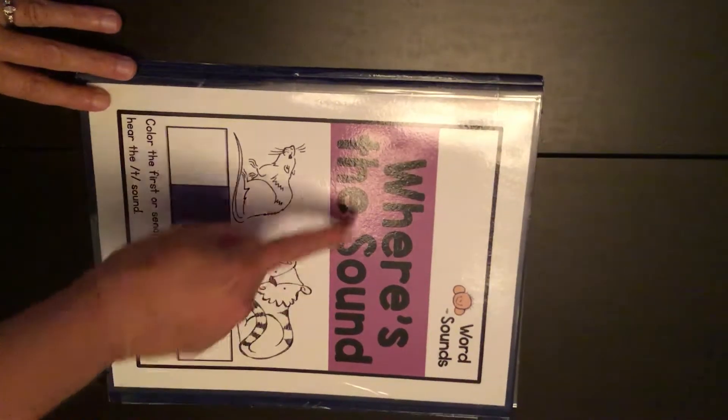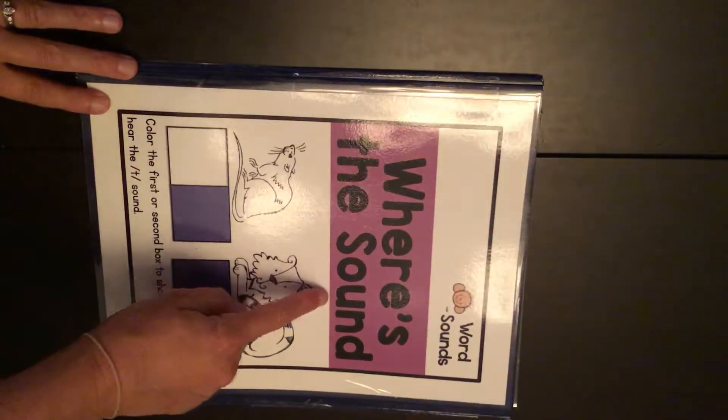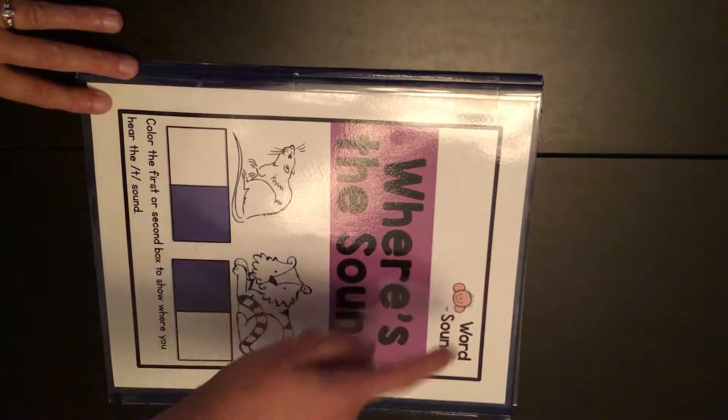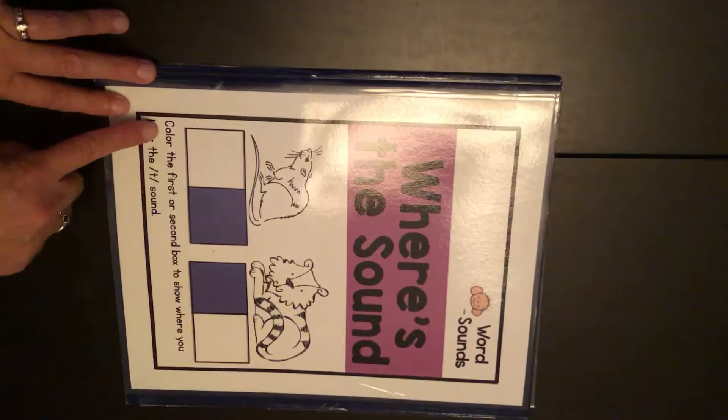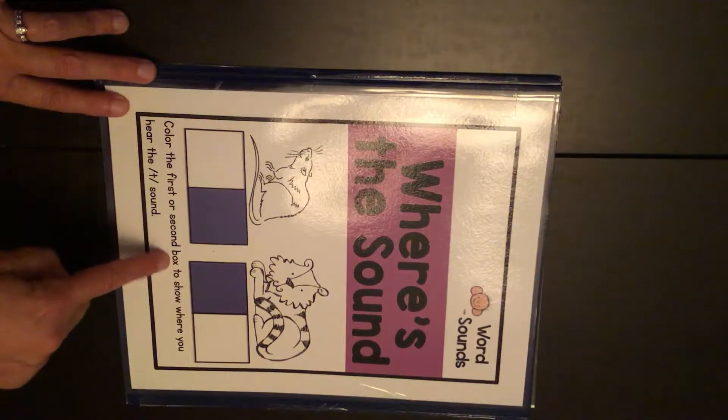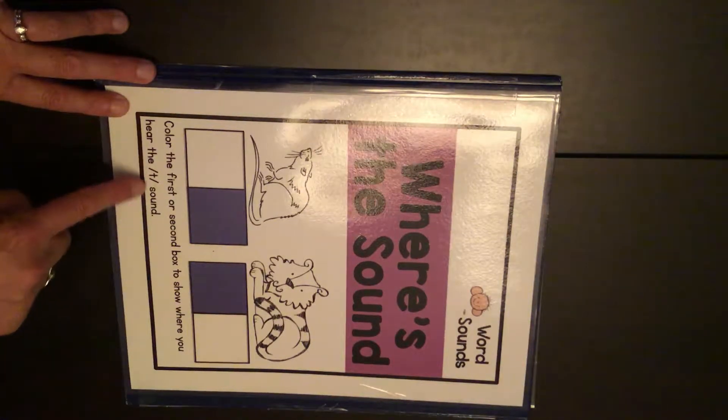This center is called where's the sound? It goes in the word sounds bin with the boy with the big ears. The instructions say color the first or second box to show where you hear the sound.